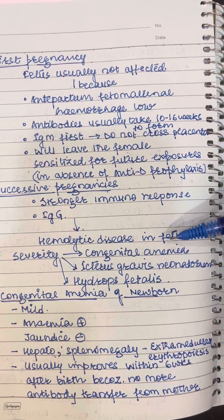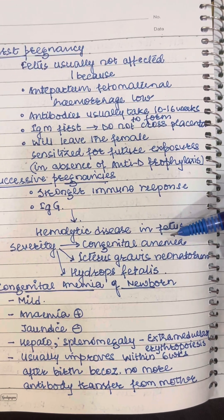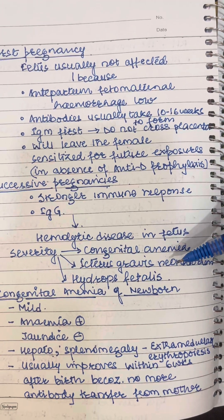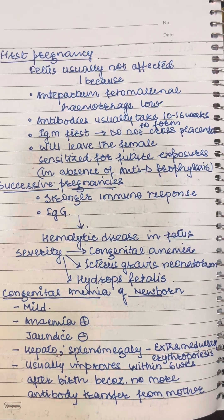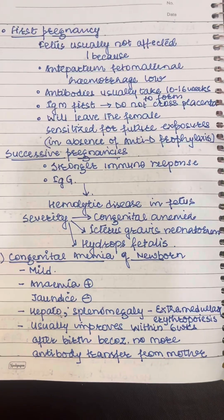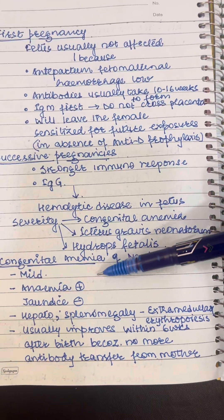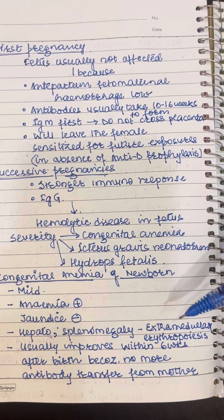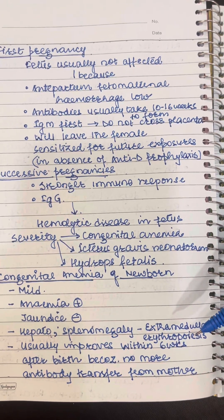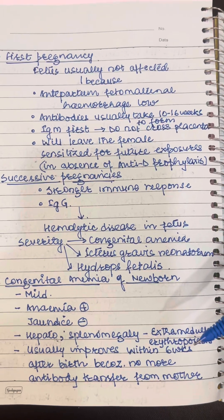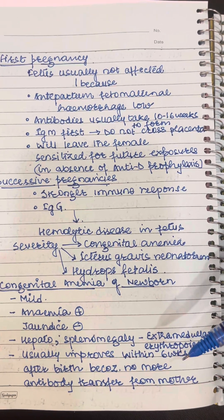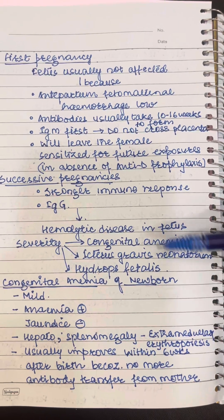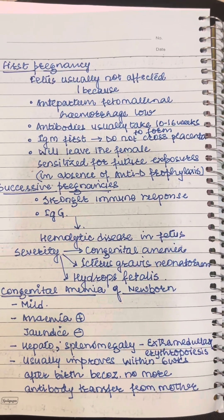With gradually increasing severity there can be congenital anemia, icterus neonatorum, or hydrops fetalis in the baby. When hemolysis is mild there is only anemia, jaundice is not present, and there could be hepatomegaly or splenomegaly due to extramedullary hematopoiesis. Within six weeks this subsides after birth because no more antibodies transfer to the baby after delivery, leading to congenital anemia of the newborn.